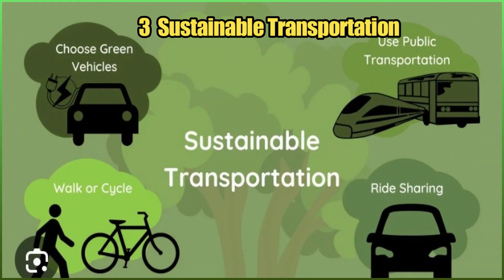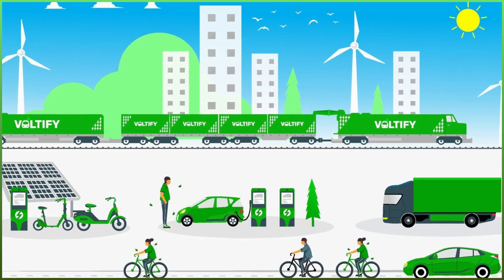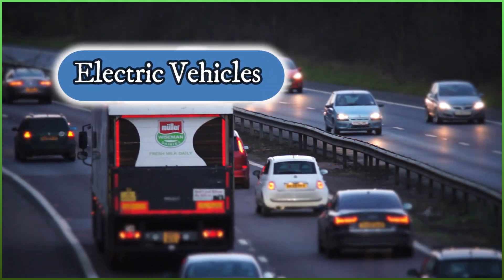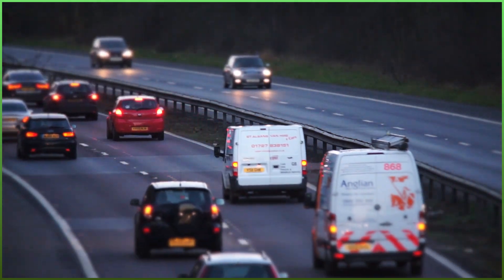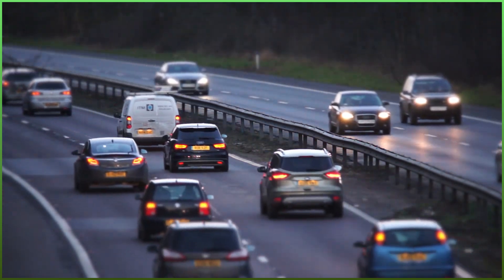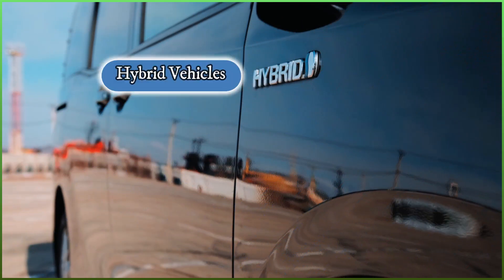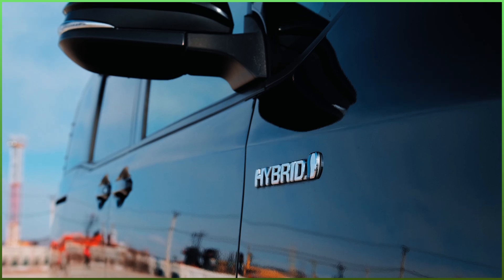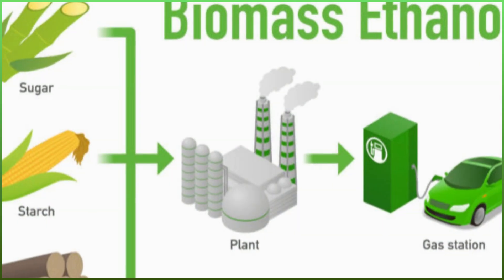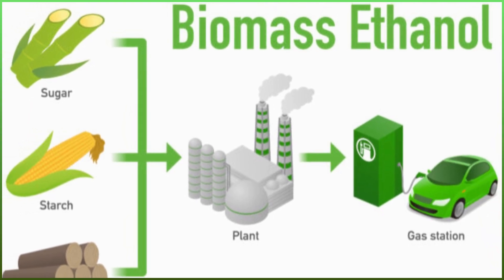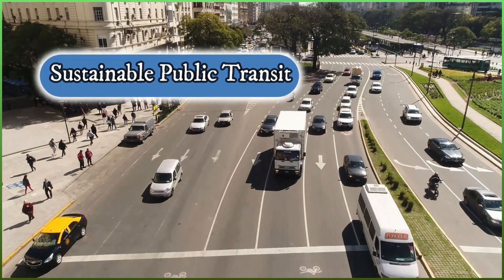Number three: sustainable transportation — innovations aimed at reducing the environmental impact of transportation. Electric vehicles, including cars, buses, and trucks powered by electricity, eliminate tailpipe emissions. Companies like Tesla have been at the forefront of popularizing EVs. Hybrid vehicles combine an internal combustion engine with an electric motor to improve fuel efficiency. Biofuels are fuels derived from renewable biological sources, offering a lower-carbon alternative to traditional fossil fuels.